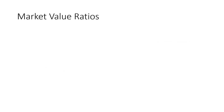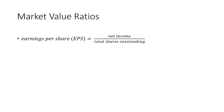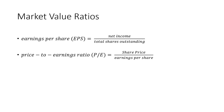Moving on to market value ratios — these measure a company's performance on stock markets from an investor's perspective. The first ratio is earnings per share (EPS): net income divided by total shares outstanding. The next is the price-to-earnings (P/E) ratio: share price divided by earnings per share, indicating how many dollars are paid per unit of profit. A high P/E could mean the stock is overpriced, or that investors expect higher future earnings.